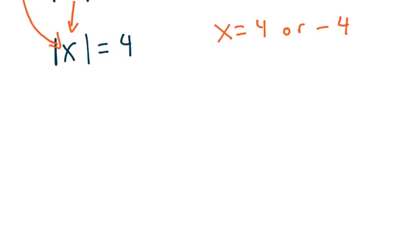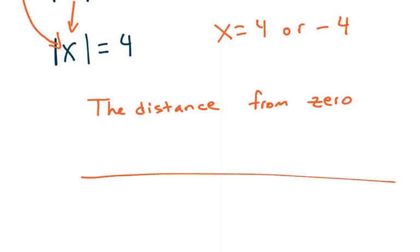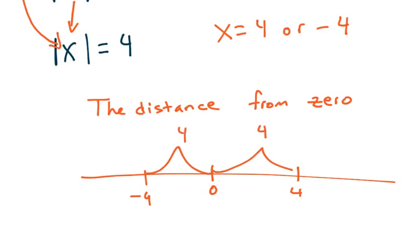The technical definition of absolute value is the distance from 0. How far are you from 0? So the absolute value of 4 — the distance that 4 is from 0 — is 4. The absolute value of negative 4 is also 4, because it's 4 away from 0. That's really what's going on here.